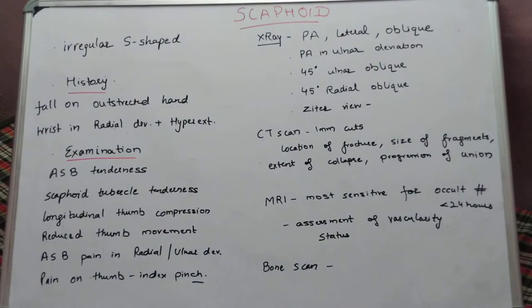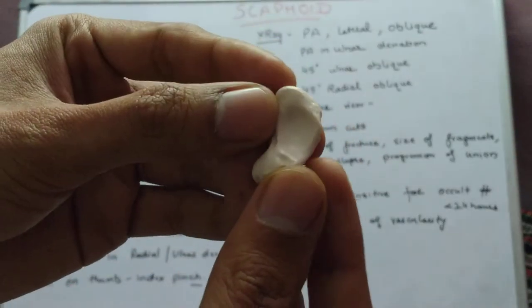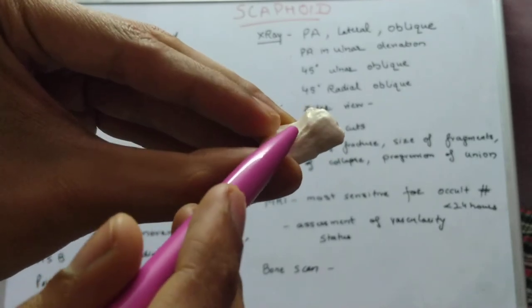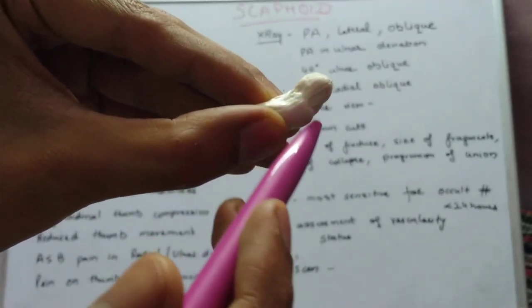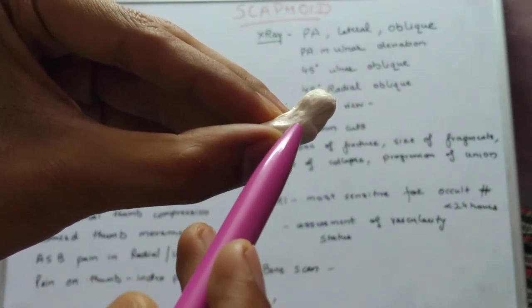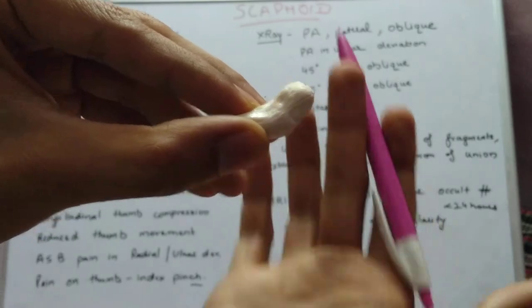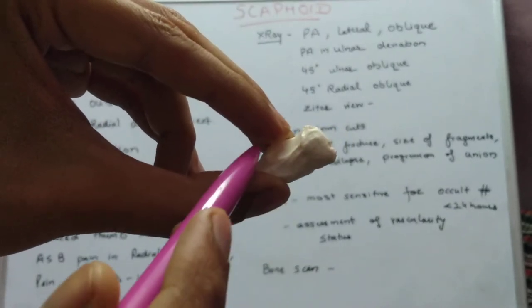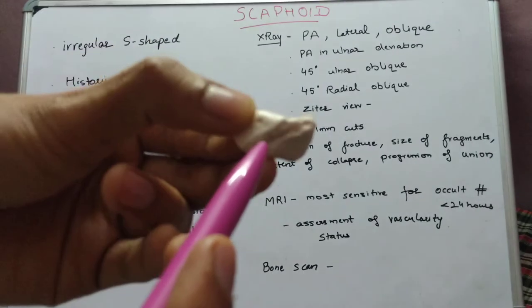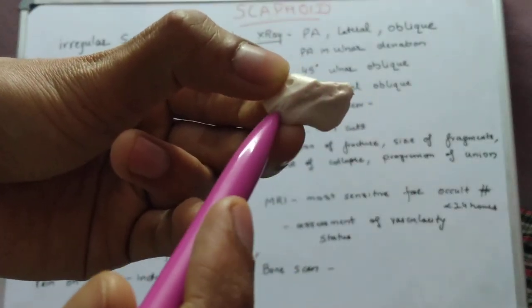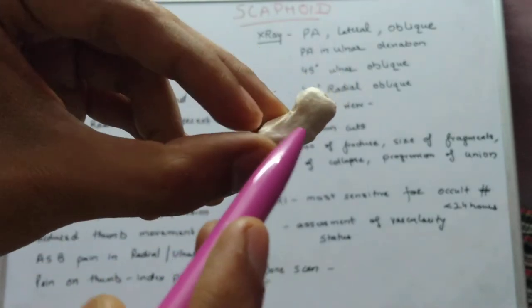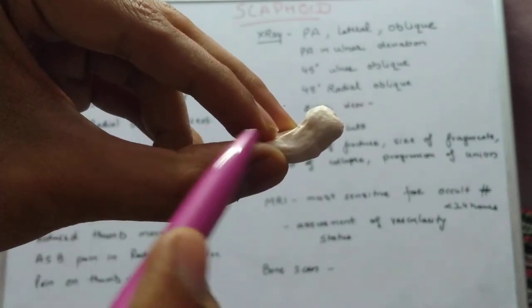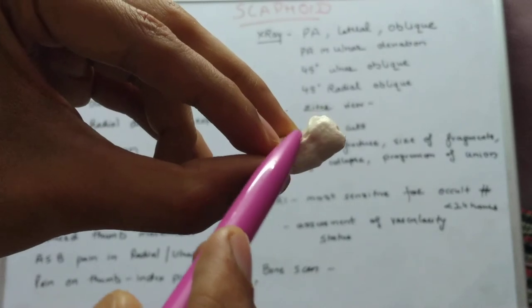Looking at the various parts of the scaphoid bone: the articulating part articulates with the capitate bone lying over the middle aspect, and the lateral aspect forms the scaphoid bone of the right hand. The various parts include the distal pole, the proximal pole, and in between the waist, with the dorsal radial surface on top. The distal pole has a tuberosity, and fractures are most common over the waist of the scaphoid bone.